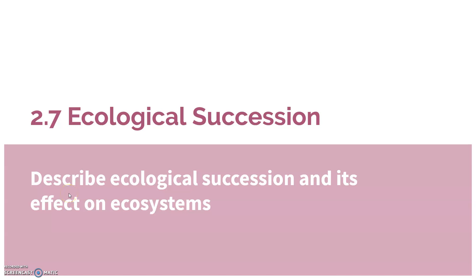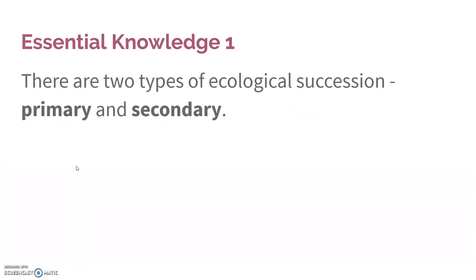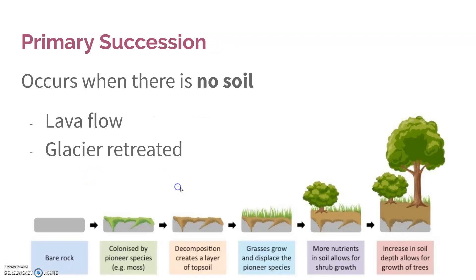This last video will be on ecological succession. There are two different types: primary and secondary. Primary occurs when there is no soil — for instance, if a volcano erupted and left behind lava that solidified into rock, or a glacier retreated, which just means it melts and leaves behind bare rock.